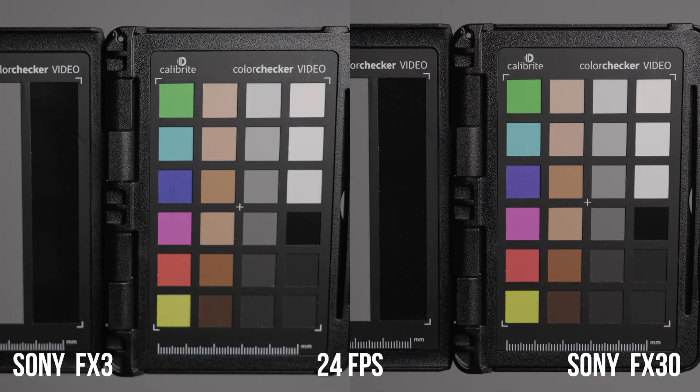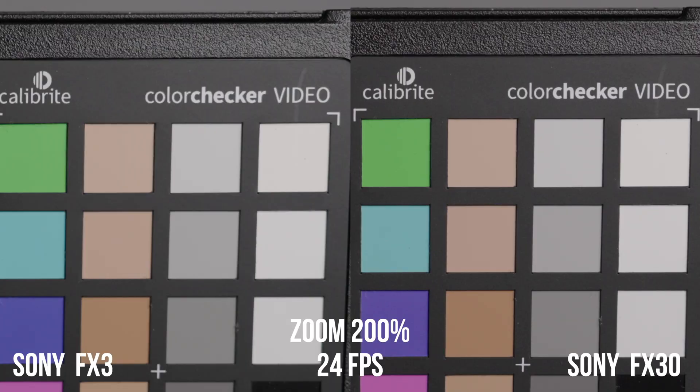I've definitely noticed that the image on the FX30 is noisier than the FX3 across the board. Looking at this example at the base ISO of 800, you may not see it in the full-size image, but when you zoom in there's definitely a difference. I'll go into this in more depth in a future video. For this test, I shot both cameras in CineEI at their lower base ISO of 800, S-Log3, 24 frames per second, shutter at 1/50, and a custom white balance. I set exposure using a 41% zebra and a gray card with the LUT turned off.